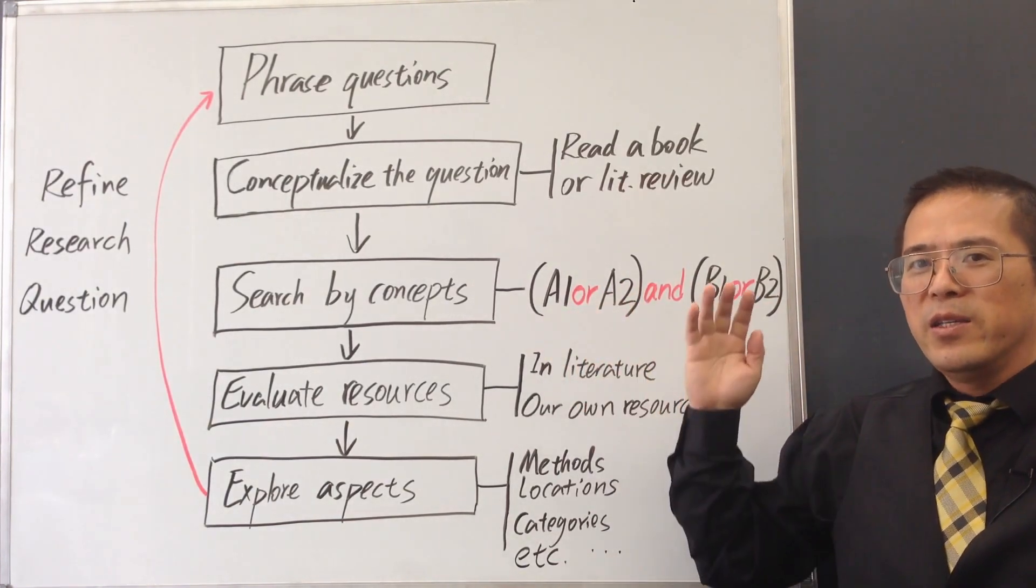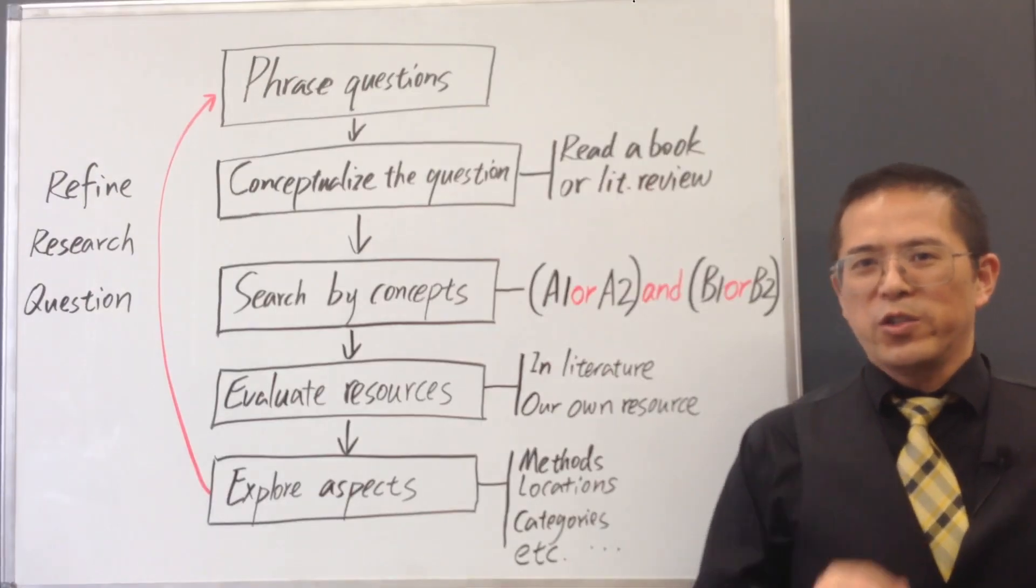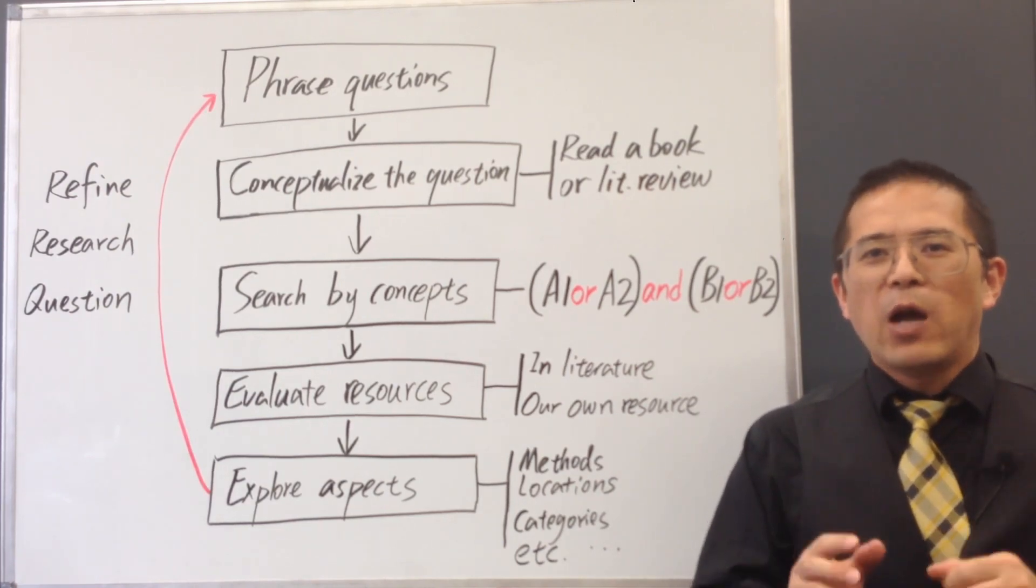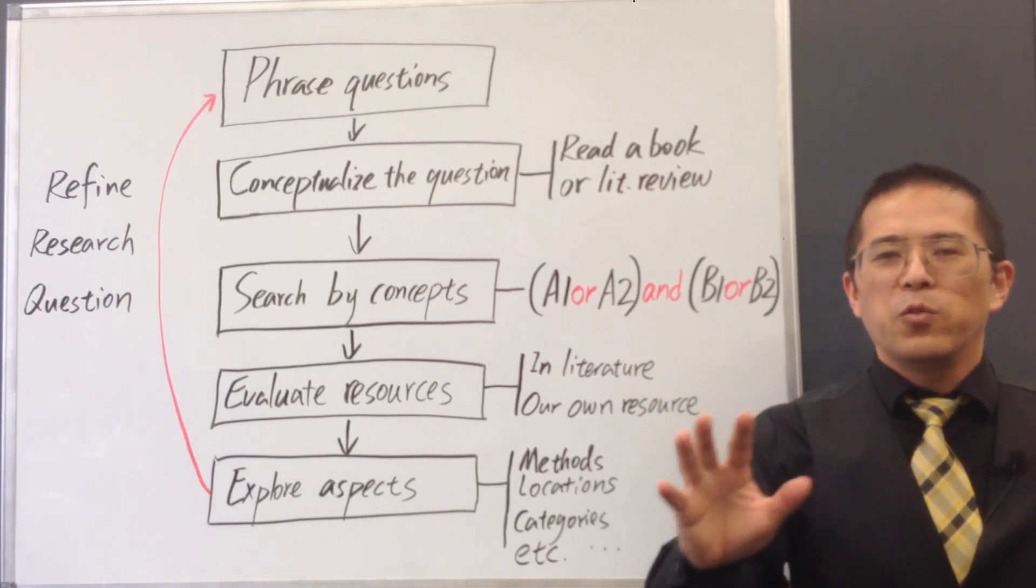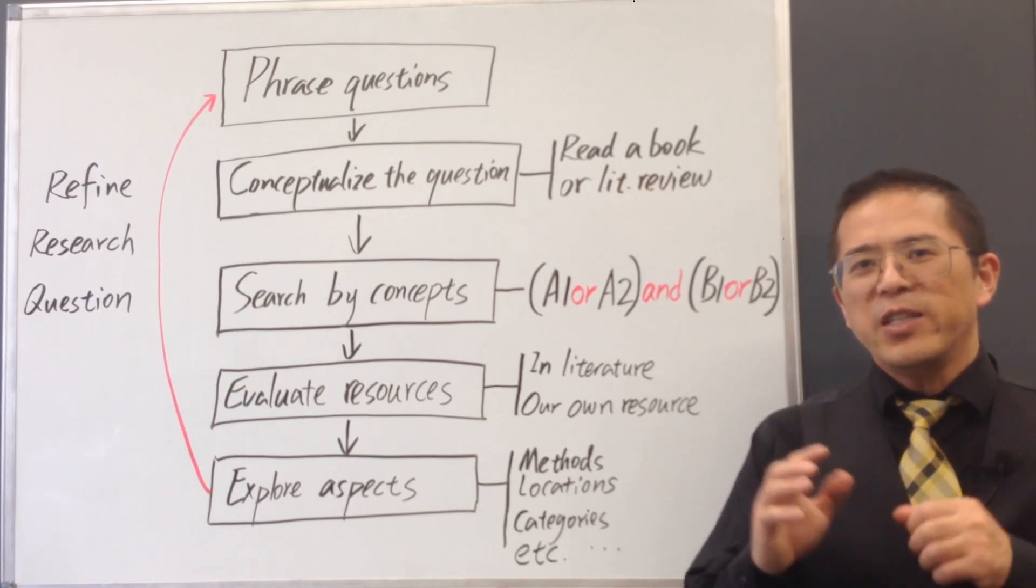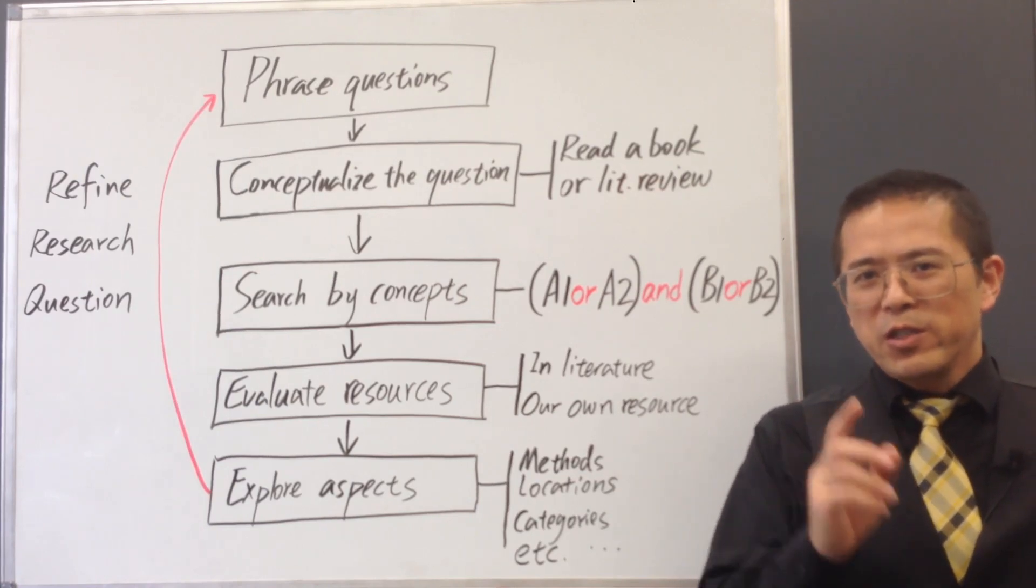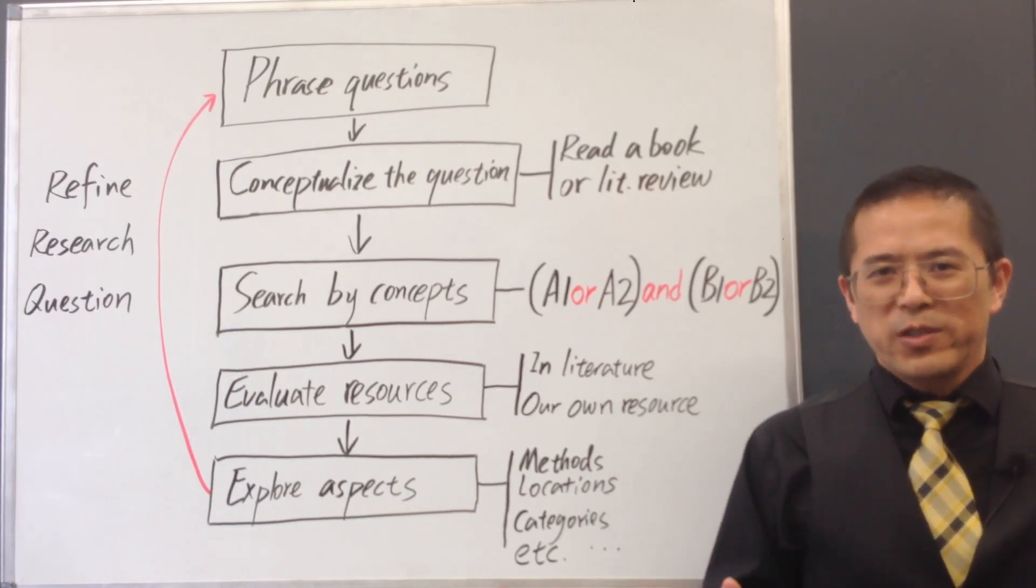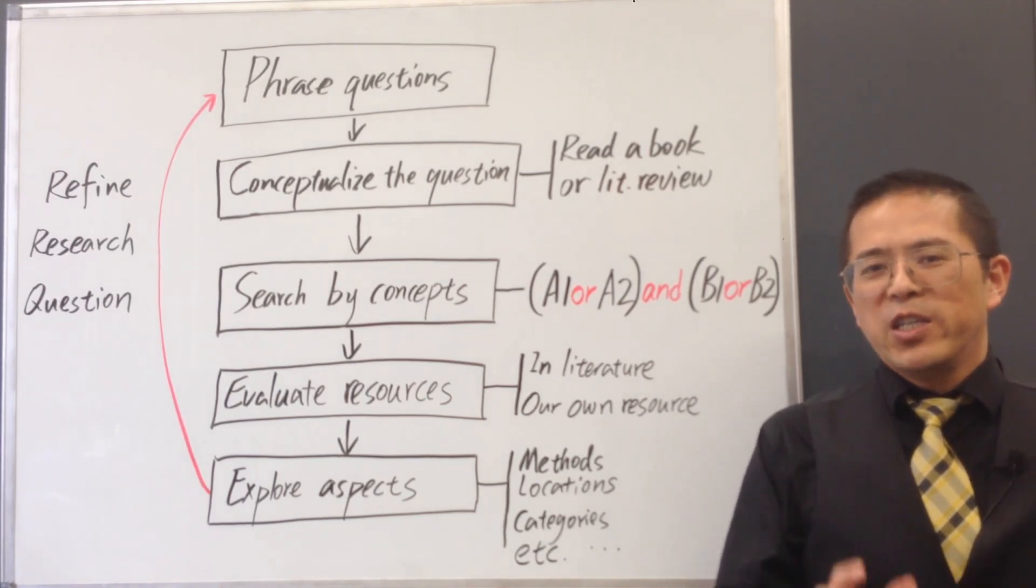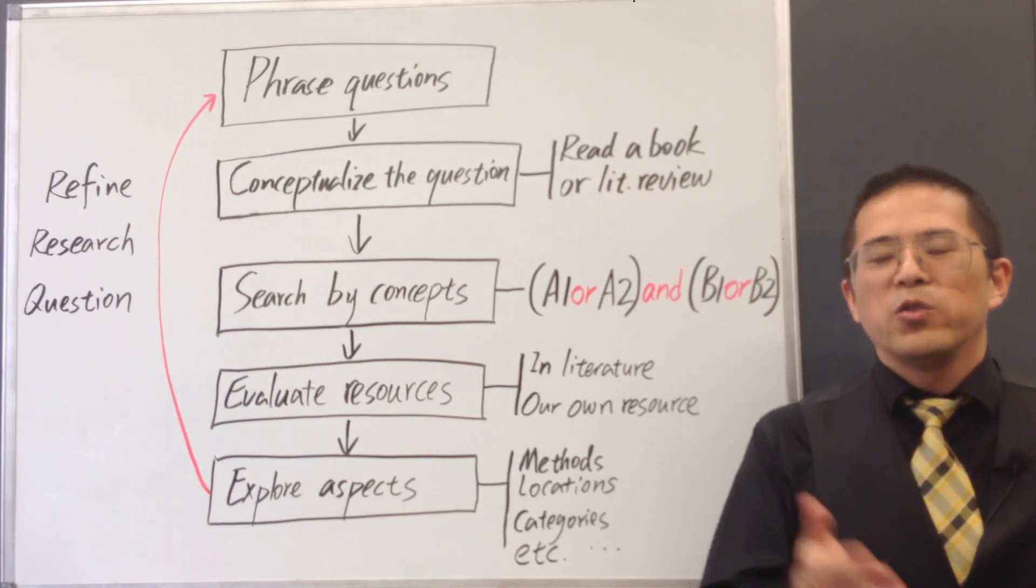As we run the search, we may identify important authors and leading research groups in our field and follow their work. We may identify appropriate methodologies and validated instruments for our research. We may also identify variations in terms used by researchers and define our own terminology. Sometimes, we may identify key journals in our field and browse them cover to cover.